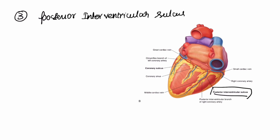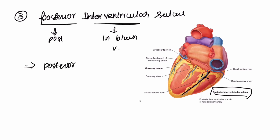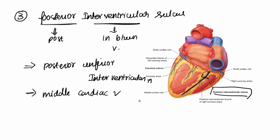The third is the posterior interventricular sulcus, present posteriorly in between the two ventricles. It contains the posterior inferior interventricular artery and the middle cardiac vein. That's all about the external features of the heart.